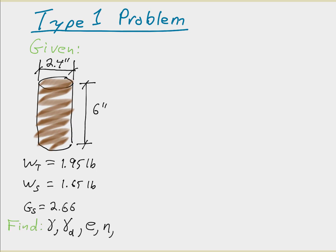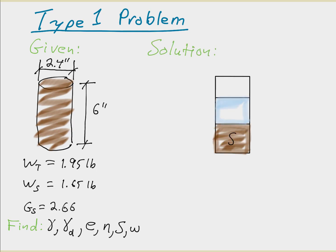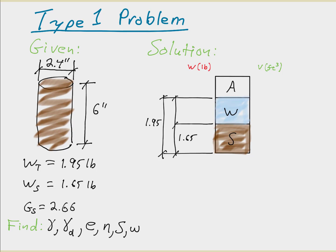We are asked to determine the total unit weight, dry unit weight, void ratio, porosity, and water content. We start by creating a three-phase diagram, recording weights in pounds on the left and volumes in cubic feet on the right. The total weight is 1.95 pounds and the weight of solids is 1.65 pounds. The weight of the water is 1.95 minus 1.65, which gives us 0.30 pounds, and we record this on the diagram.